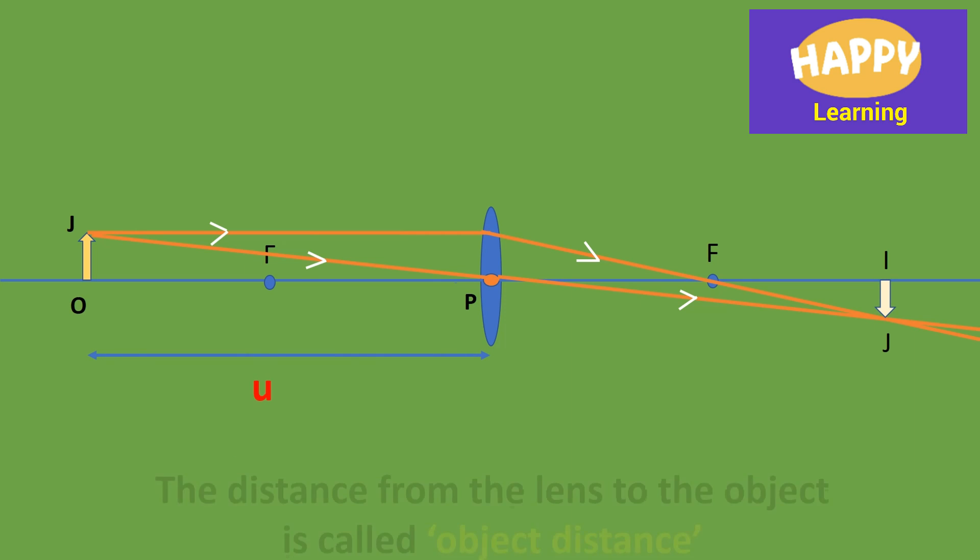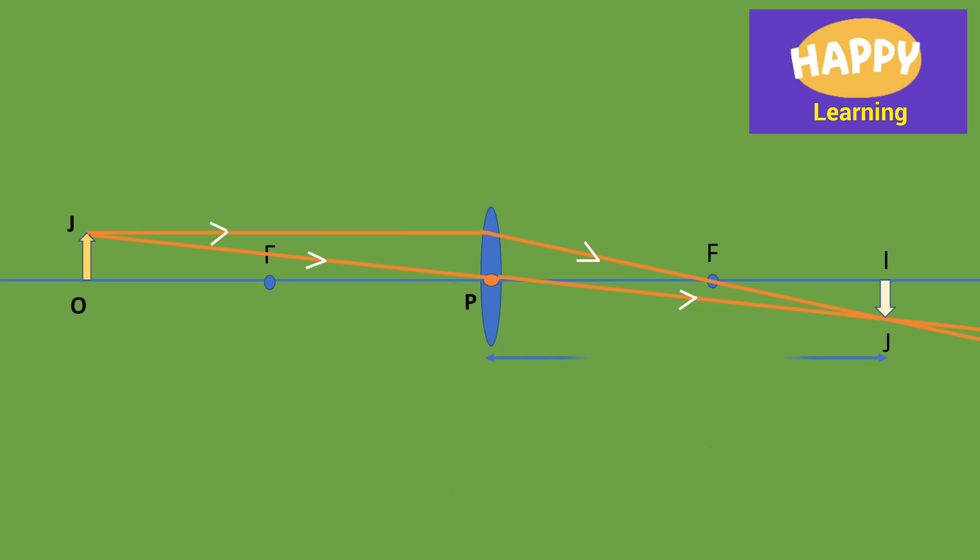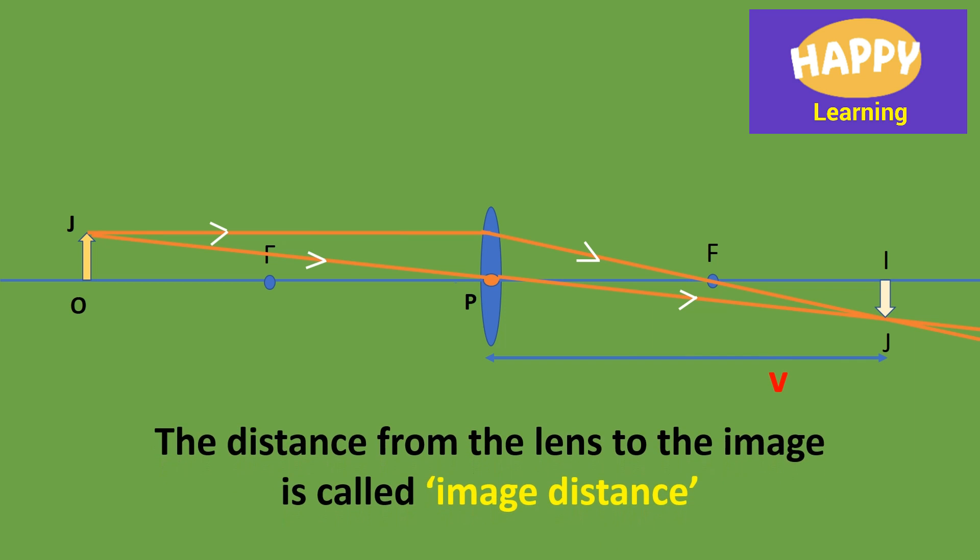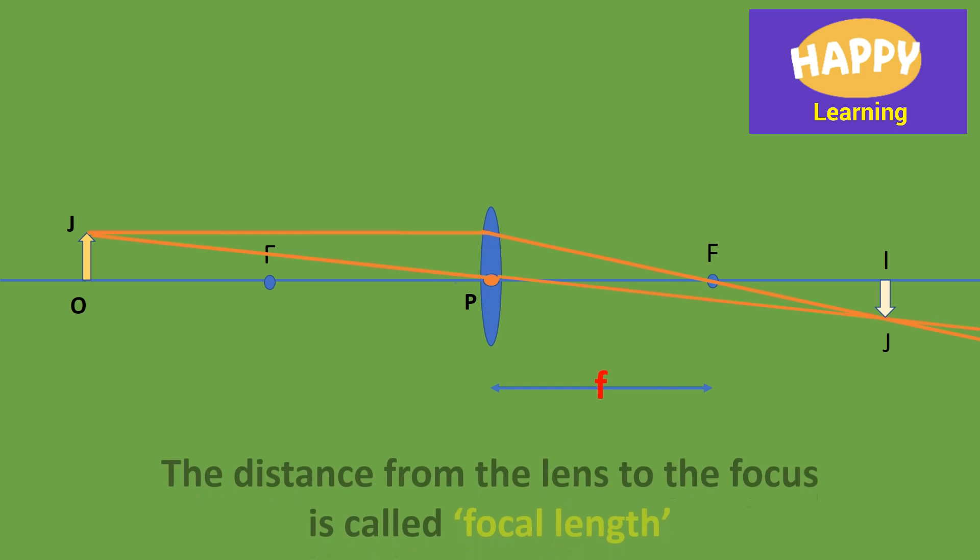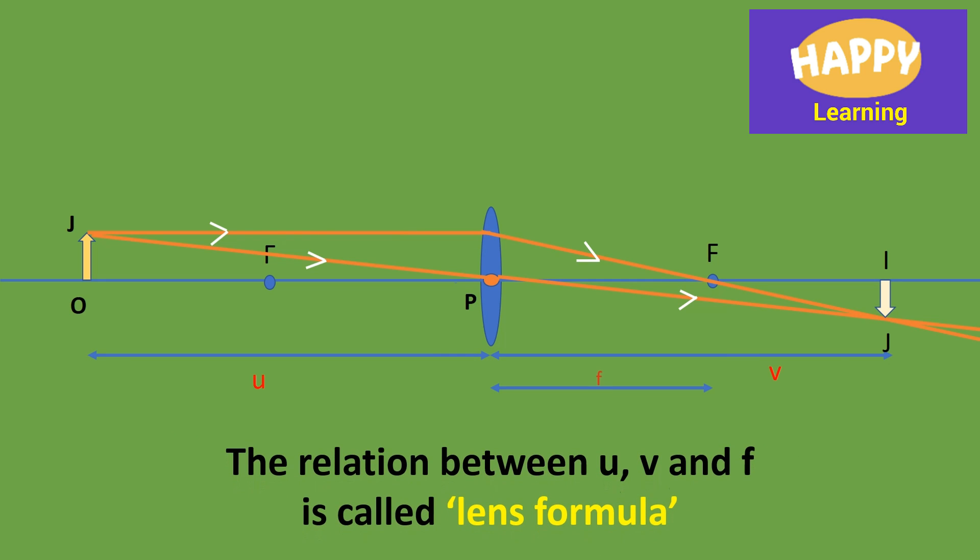The distance from the lens to the object is called object distance and it is represented by the letter U. The distance from lens to the image is called image distance and it is represented by the letter V. The distance from the lens to the focus is called focal length. It is represented by the letter F. The relation between U, V and F is called lens formula.